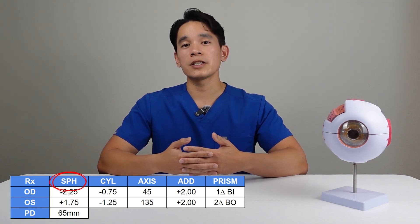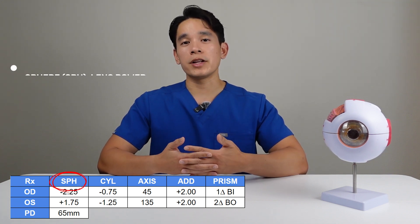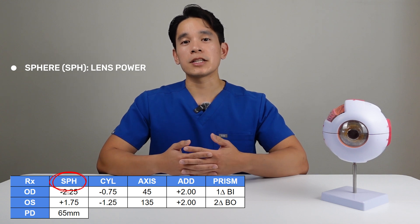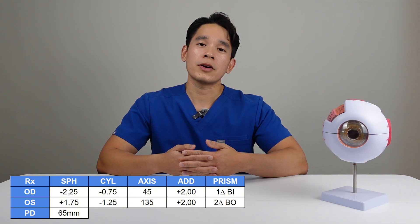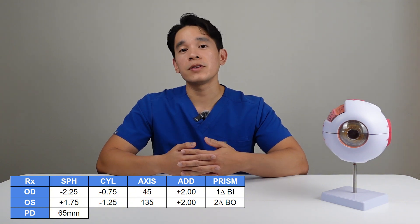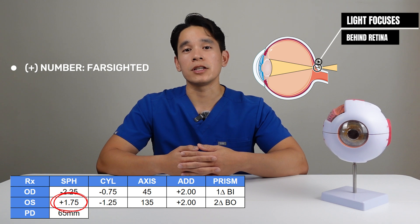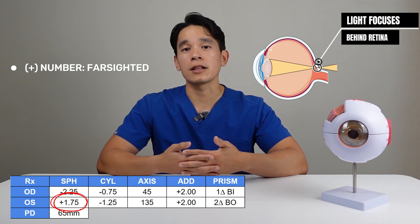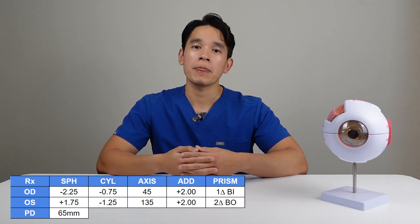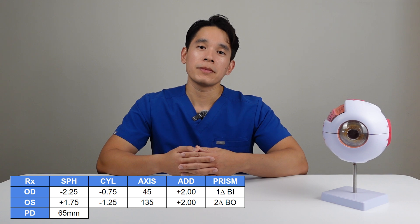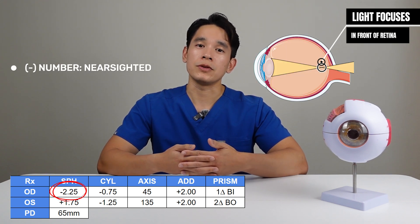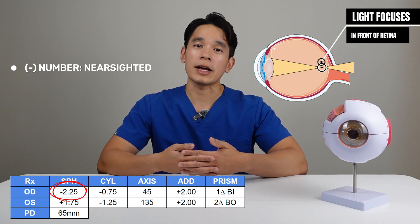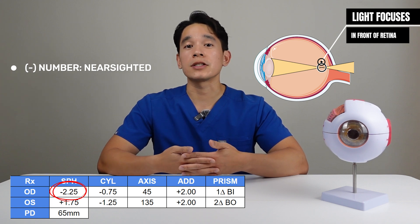In the first column, you'll see SPH. This is the power of the lens needed to correct your vision. You can see a positive or a negative number here. If you see a positive number, it means that you are farsighted, meaning you see objects better at distance and need glasses to help with your near vision. If you see a negative number, it means that you are nearsighted — you see objects better up close but need glasses to help with your distance vision.